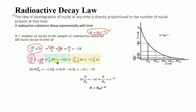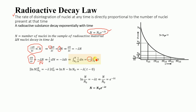Now we are going to integrate this equation. The limits on the left-hand side are from the initial number of nuclei N₀ to the final number N, integrating (1/N)dN. On the right-hand side, −λ is a constant, and we integrate 1 with respect to time from the starting time 0 up to the final time t.